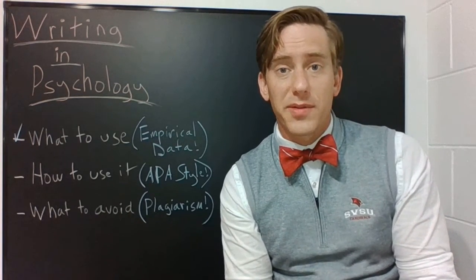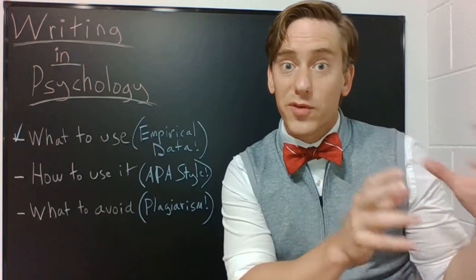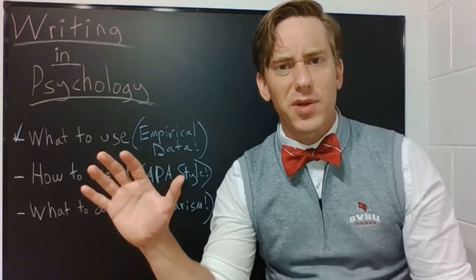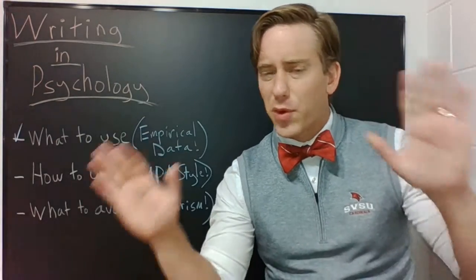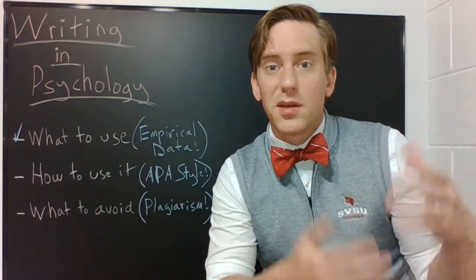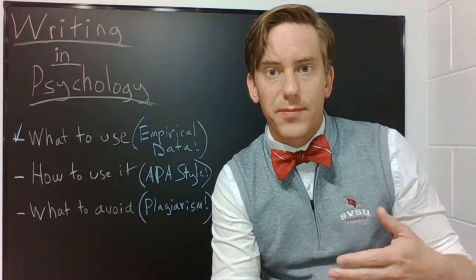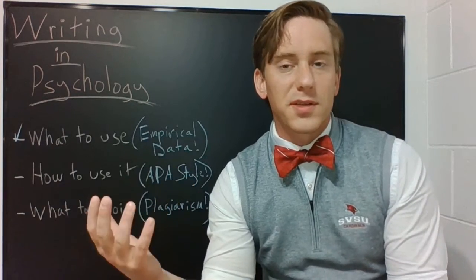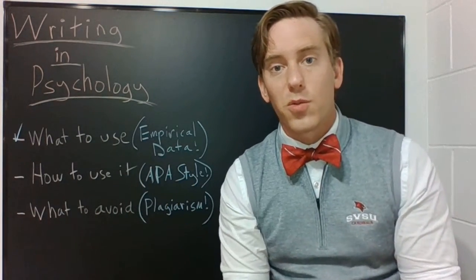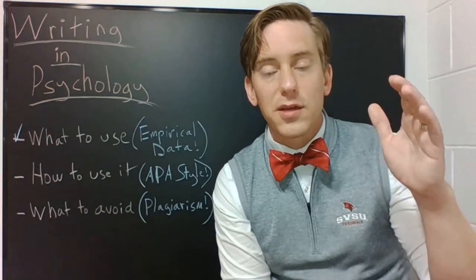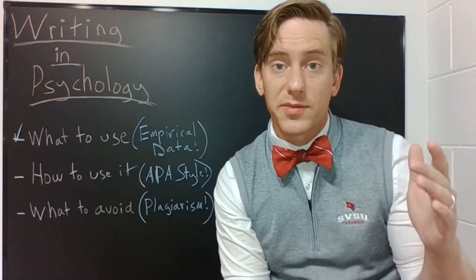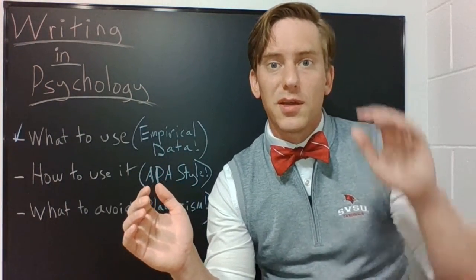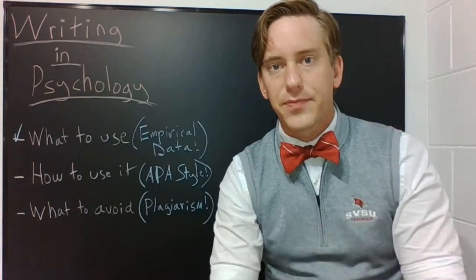Sometimes students aren't really comfortable initially with how to use citations. They'll either be over-inclusive and stick an in-text citation at the end of every sentence, which is overkill, or they won't include one until the end of every paragraph. Both of those are problematic. If you're talking about one study for seven sentences in a row, there's no reason to cite it seven times. I recommend a bookend system: include an in-text citation at the first mention of new information from that reading, and then cap it again at the end if you've used more than just a couple of sentences about it.